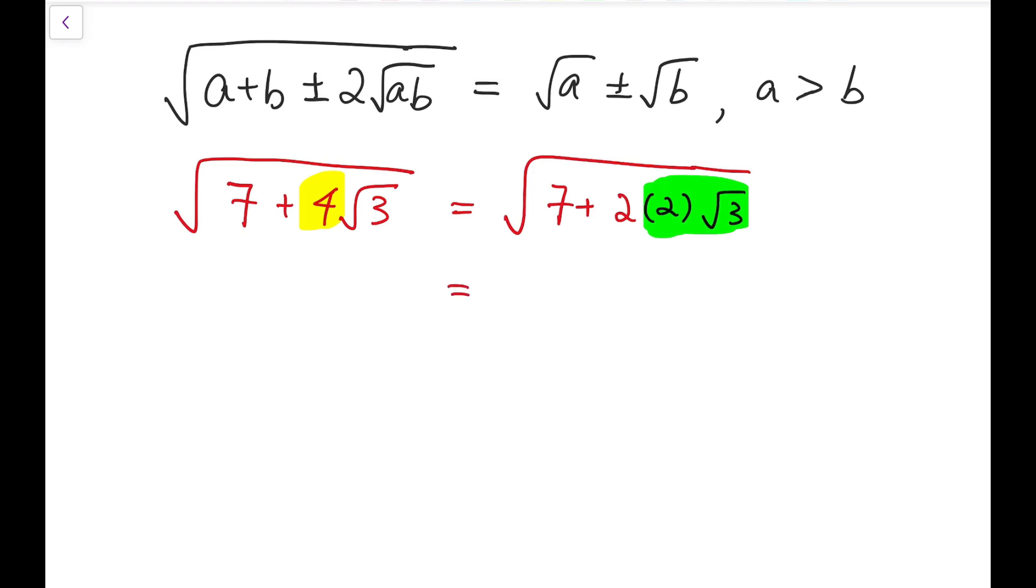So to do this, I'm going to proceed by 7 plus 2 times square root of 3 times 2 squared. Basically moving the 2 into the inner square root. And so we will have square root of 7 plus 2 times the square root of 12.